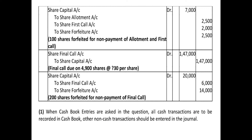Note: When cash book entries are asked, all cash transactions are recorded in the cash book; other non-cash transactions are entered in the journal. This question on forfeiture is now clear.